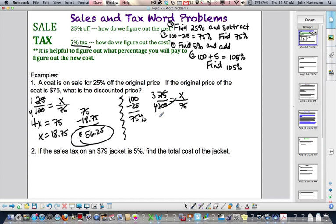25 goes in 4 times. So, I have 4x equals 3 times 75. 4x, 3 times 75 is 225. Divide by 4. That gives me the $56.25. So, either way works.